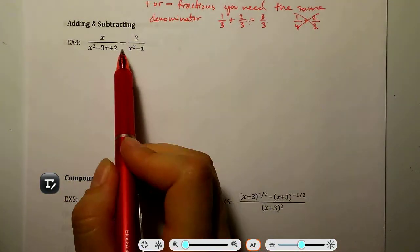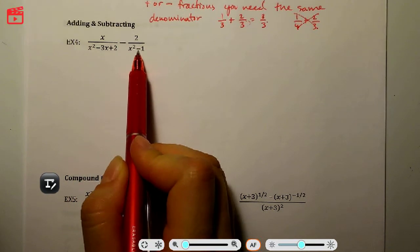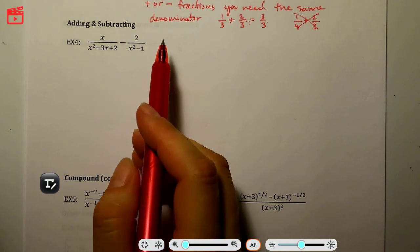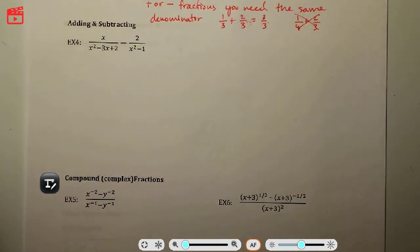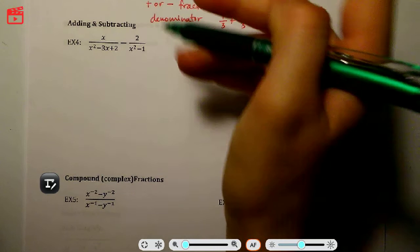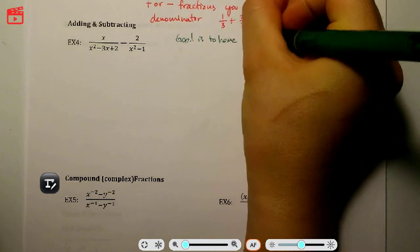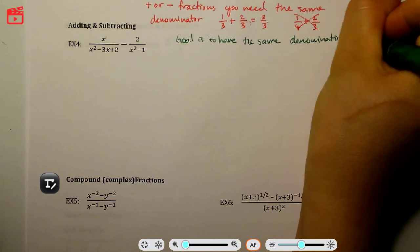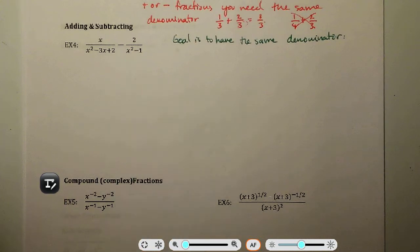Looking at our expression — x over a trinomial minus 2 over a binomial — the denominators are not the same, so we can't subtract them yet. Our goal is to create the same denominator, specifically the lowest common denominator. To do that, we'll factor both denominators first.